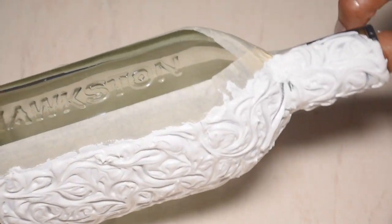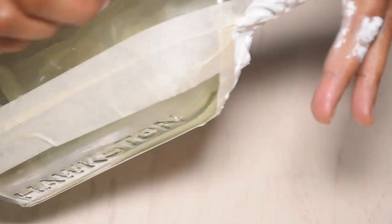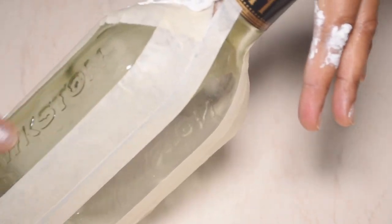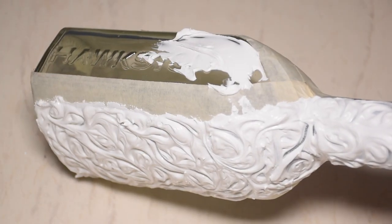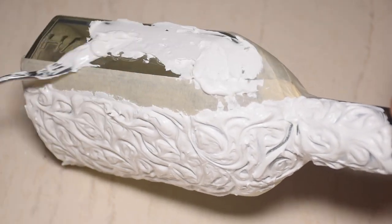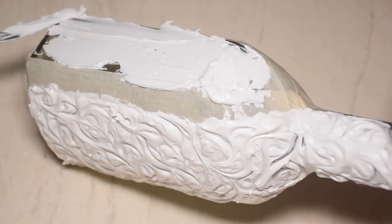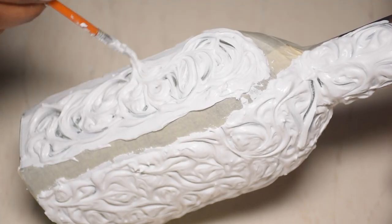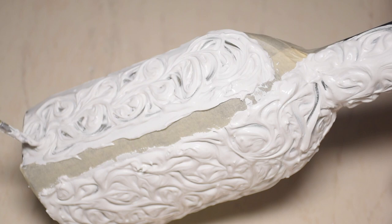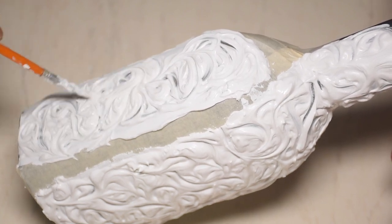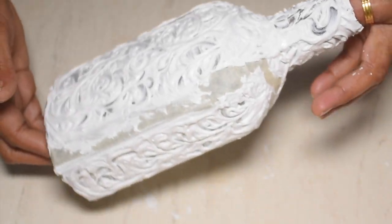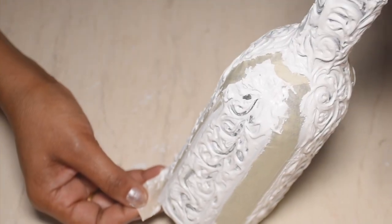In the same way, we design all sides of the bottle. The design is ready for the four sides. Now we remove the masking tape.